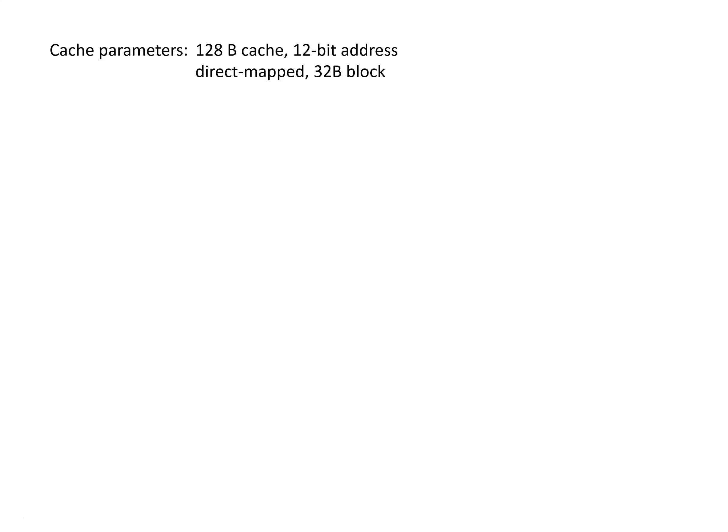In this first example, we're going to look at a direct map cache that has 32-byte blocks. One of the first things we want to figure out is how many bits of the address we're going to need for the offset, for the set or the index, and then finally for the tag.